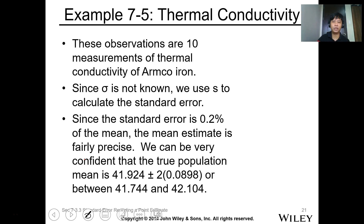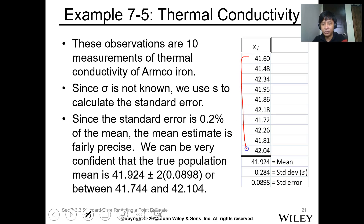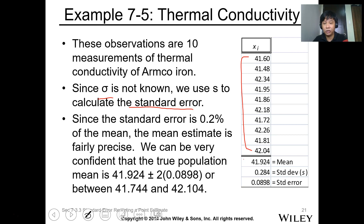Now let's have example 7-5, the thermal conductivity. We have 10 observations which measured the thermal conductivity of iron. Since we don't know the data of the population, we can get the standard error. You can use your calculator to determine the mean and standard error.